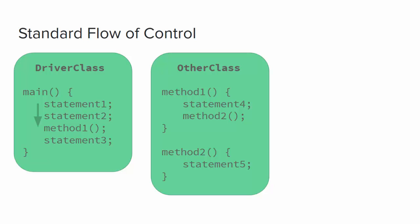In this example, main executes statement 1 followed by statement 2. When it reaches the call to method 1, main has to wait for method 1 to return before it can continue with its own statements. The flow passes to method 1 in other class, and the statements in method 1 will be executed in order until there are no more statements. Method 1 executes statement 4, but when it calls method 2, it has to wait for method 2 to return. When method 2 ends and returns, control returns to method 1. Method 1 has no additional statements, so method 1 can return. When method 1 returns, main can continue, and after the last statement of main executes, the program is finished.